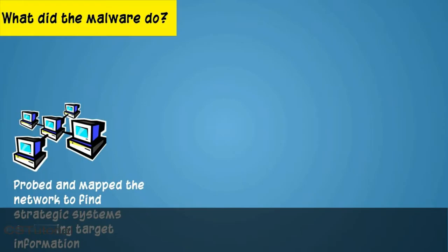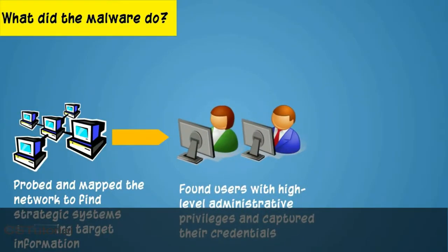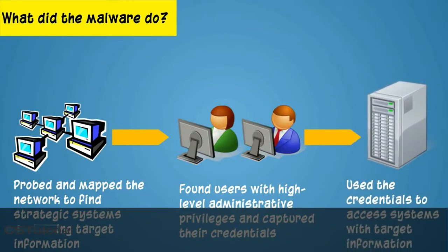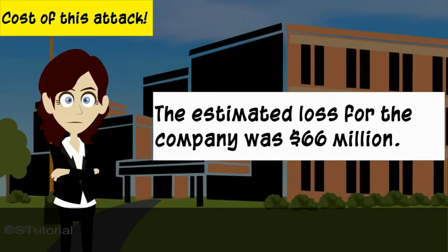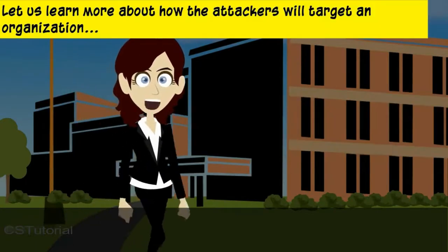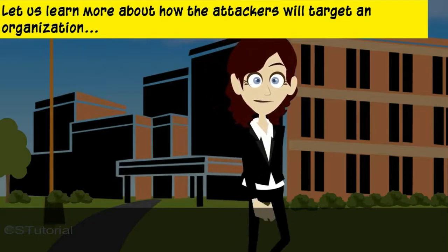What did the malware do? It probed and mapped the network to find strategic systems containing target information, found users with high level administrative privileges and captured their credentials, then used those credentials to access systems with target information. The estimated loss for the company was $66 million.